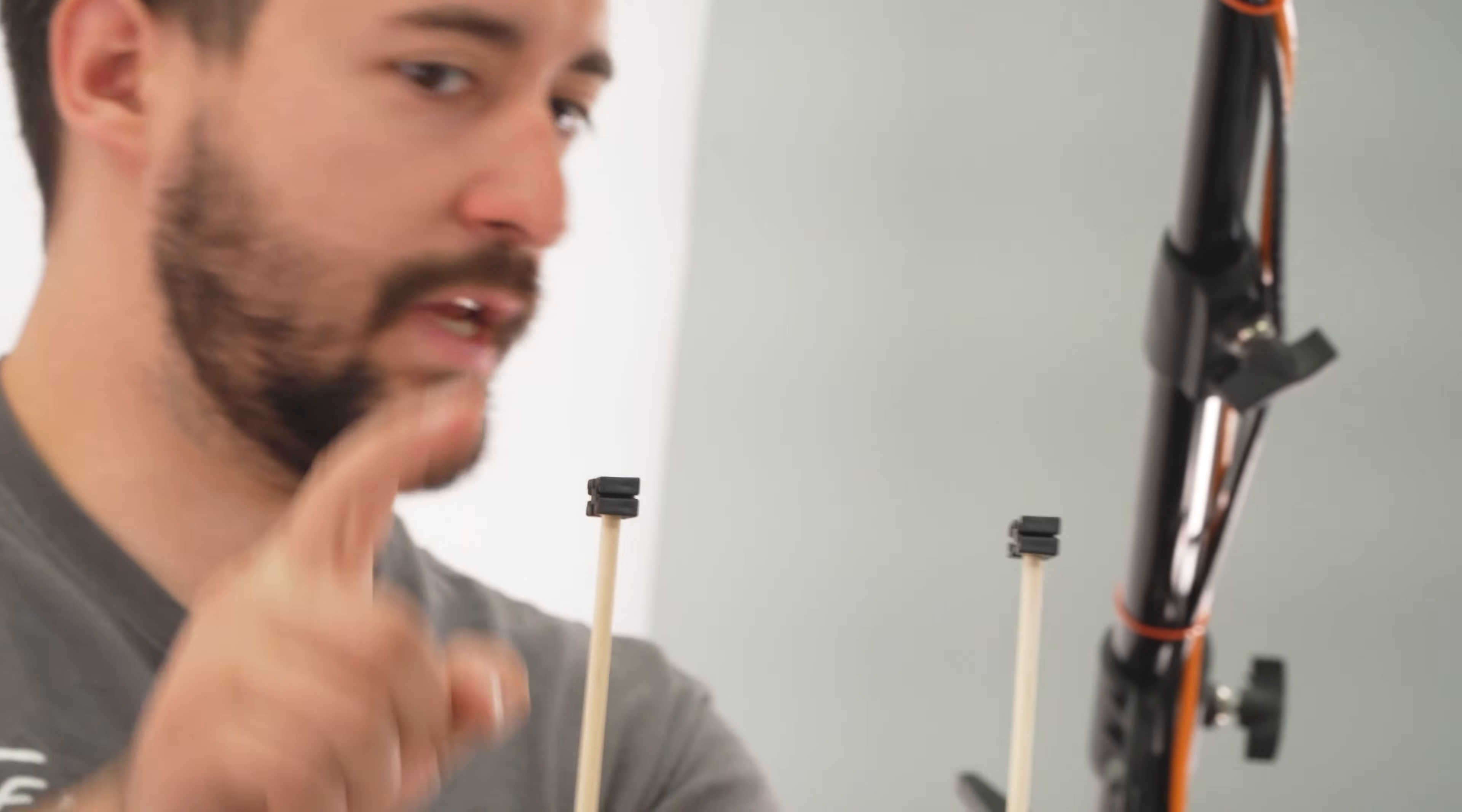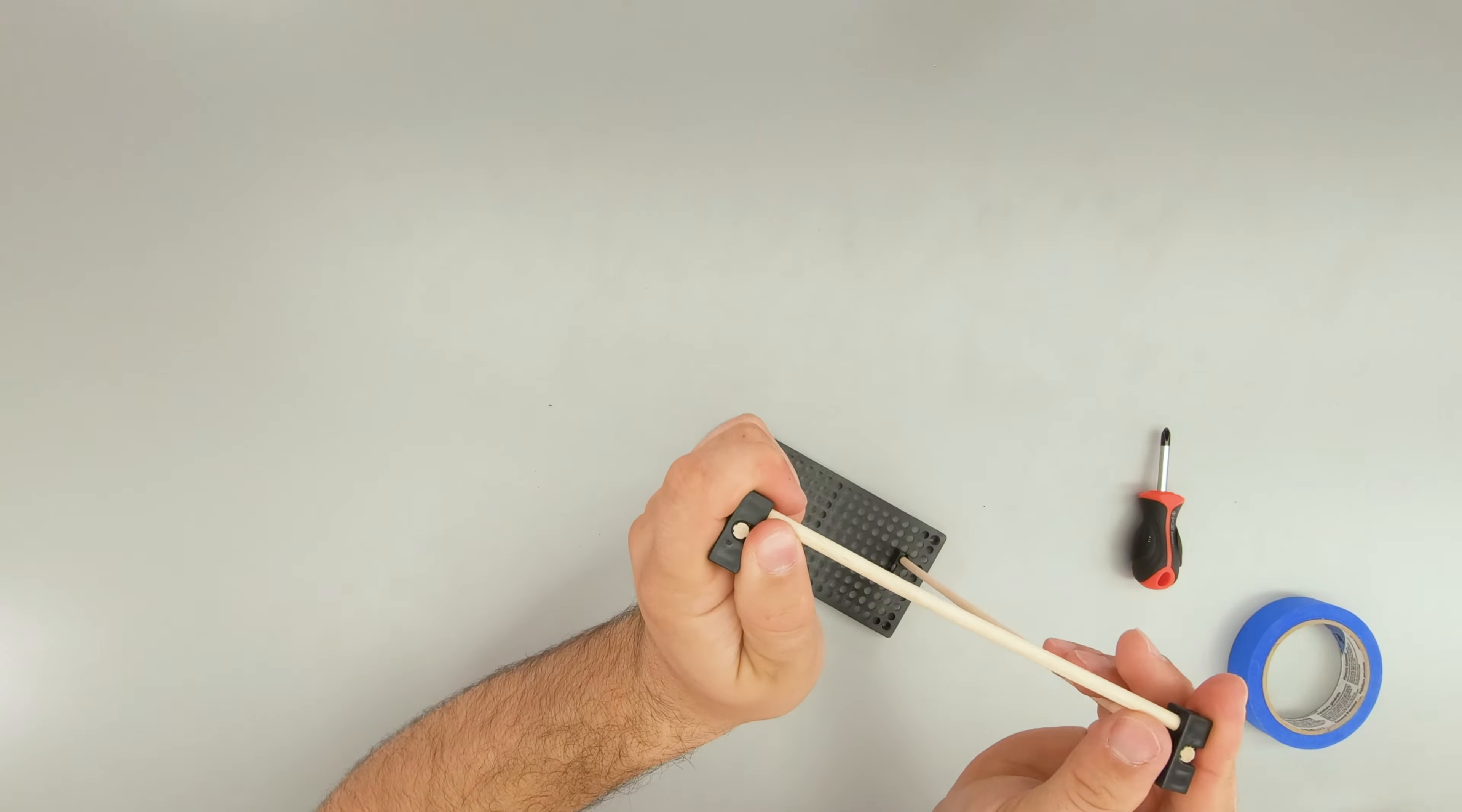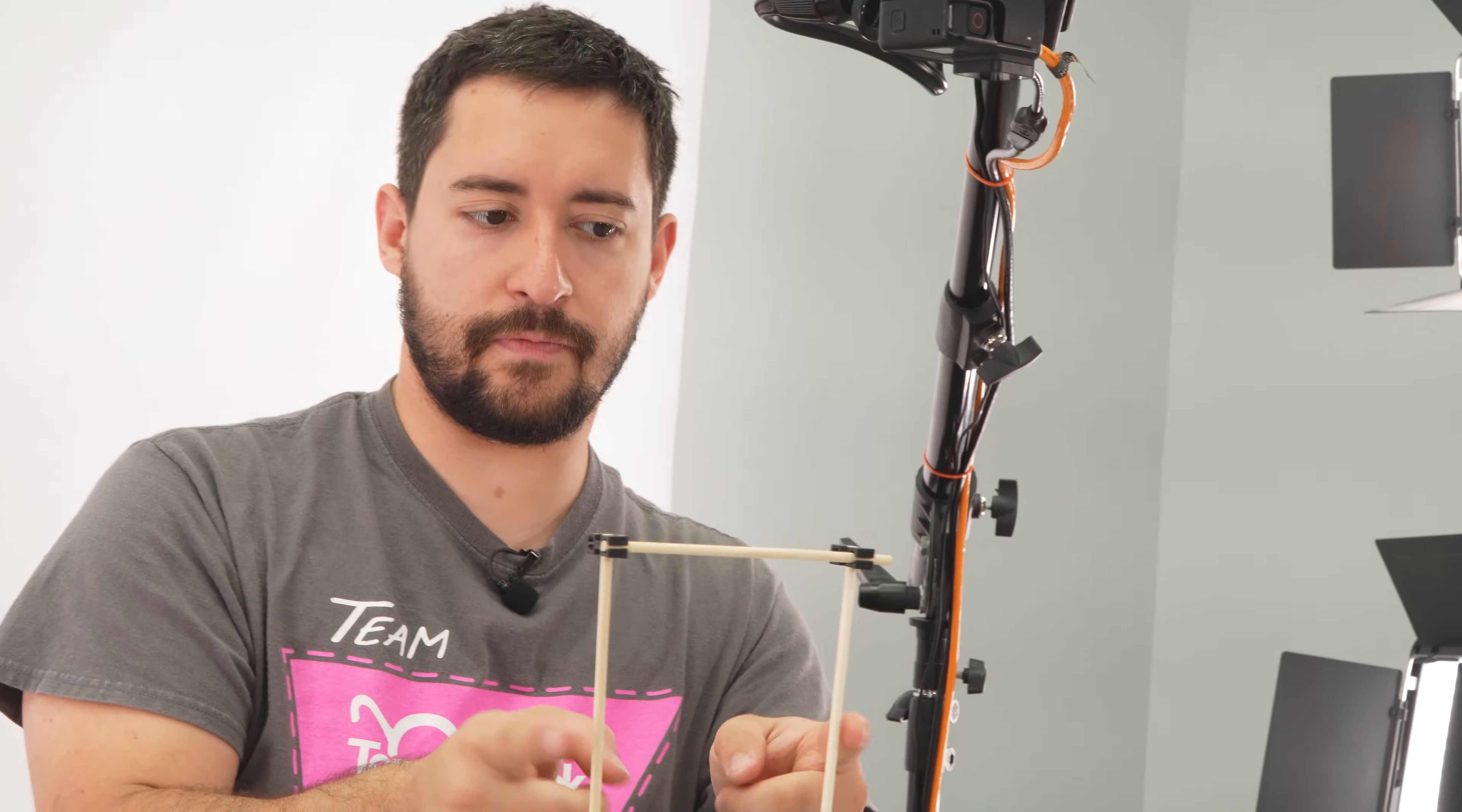Because next, we're going to add a six inch or 15 centimeter dowel like so. And I'm going to push it through so that these are both vertical.